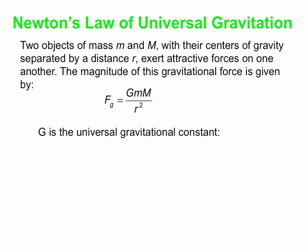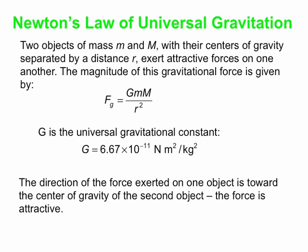Big G is known as the universal gravitational constant. It's a pretty small number in the SI unit system. It's 6.67 times 10 to the minus 11 newton meter squared per kilogram squared. This is not little g, this is big G, a whole new thing. And the direction that the force is exerted on one object by a second object is directly back toward that second object. The force is an attractive force, always with gravity.